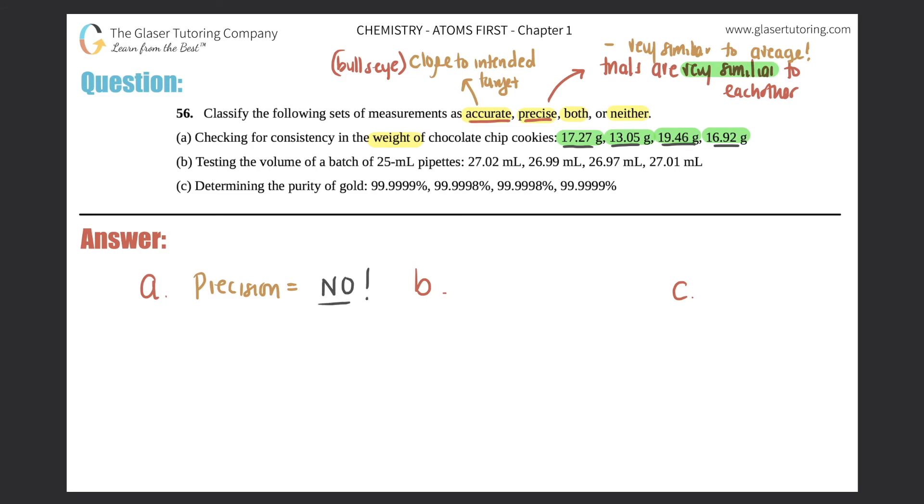But now let's find out if it's accurate. Accurate means that the results are towards an intended target. Here you're just checking for consistency in the weight, so basically you want to have the same weight. They don't really say specifically what the weight should be, so can you really be accurate? Not really, right?